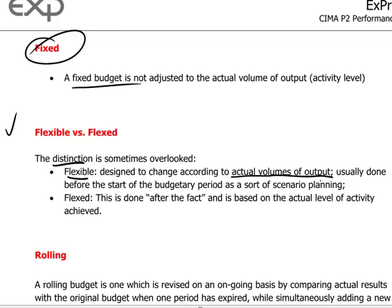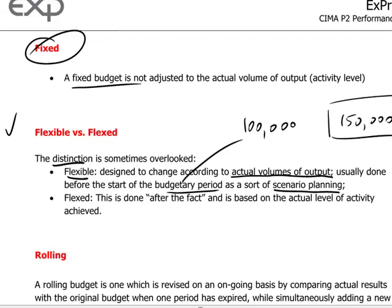Flexible budgets are used as part of scenario planning when organizing a budget. During the budget construction process, there may be different starting assumptions — either 100,000 units will be produced and sold, or perhaps if it's an extraordinary year, the company may wish to know what the budget would look like at an activity level of 150,000 units. These are two scenarios that can be worked through to understand the implications of operating at one or the other activity levels. That's flexible budgeting.